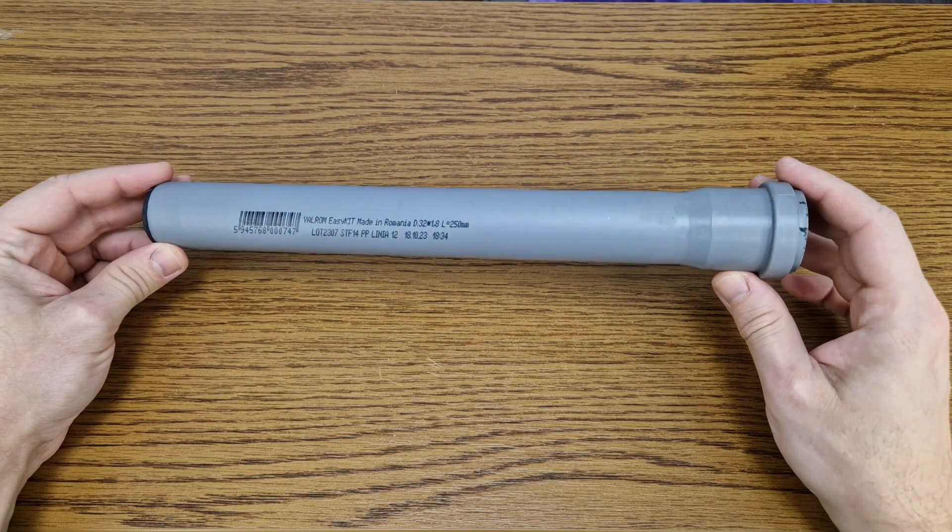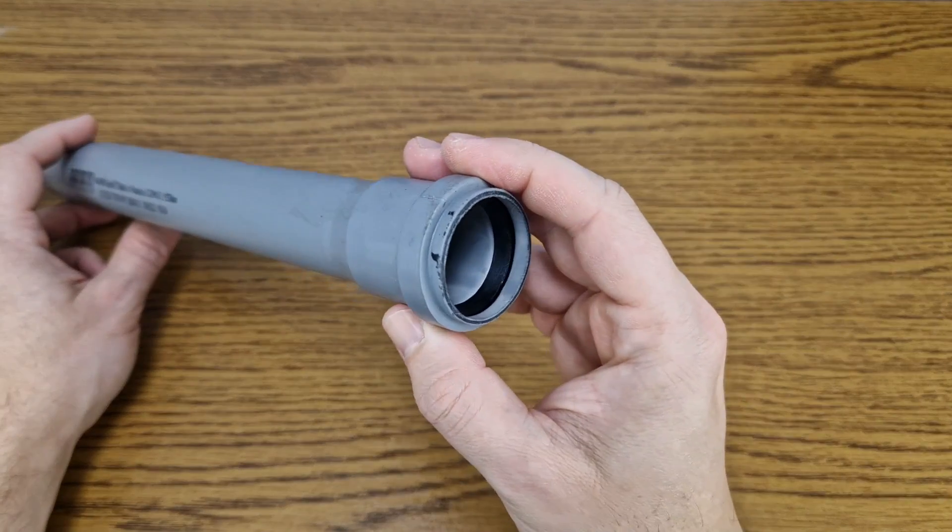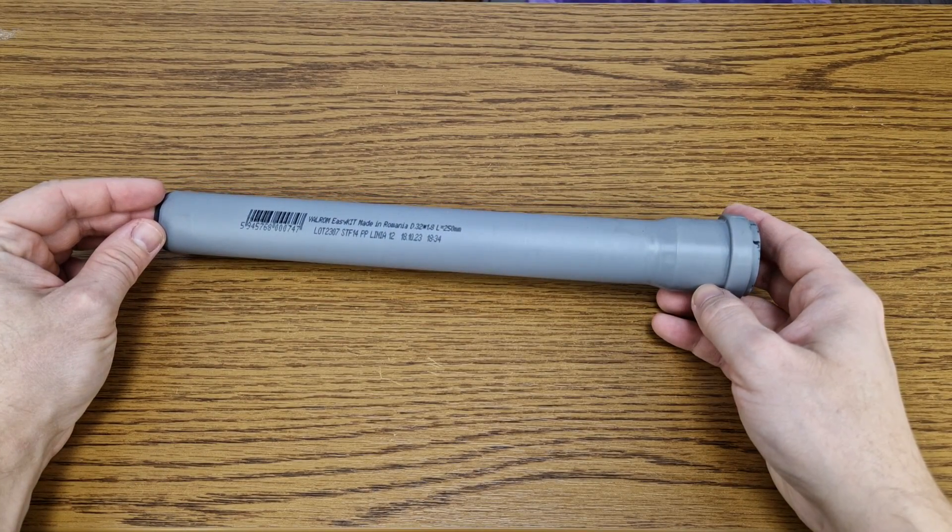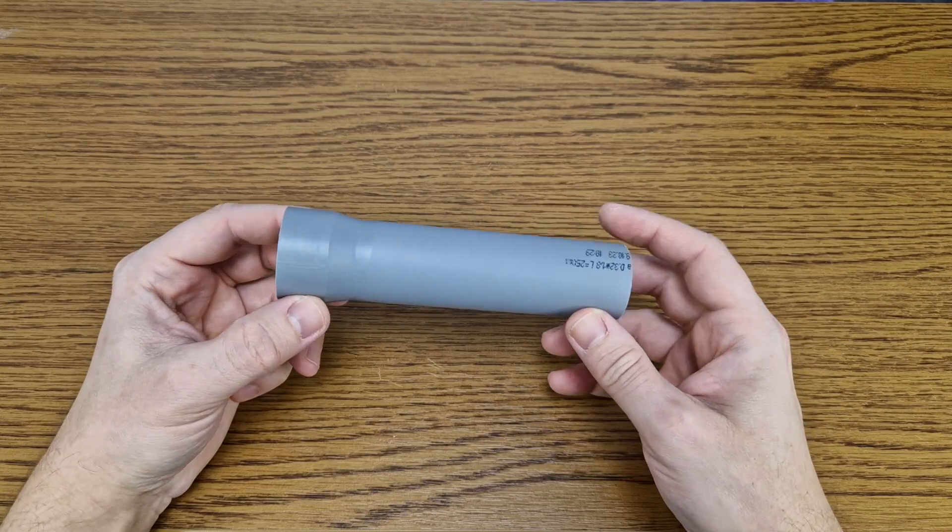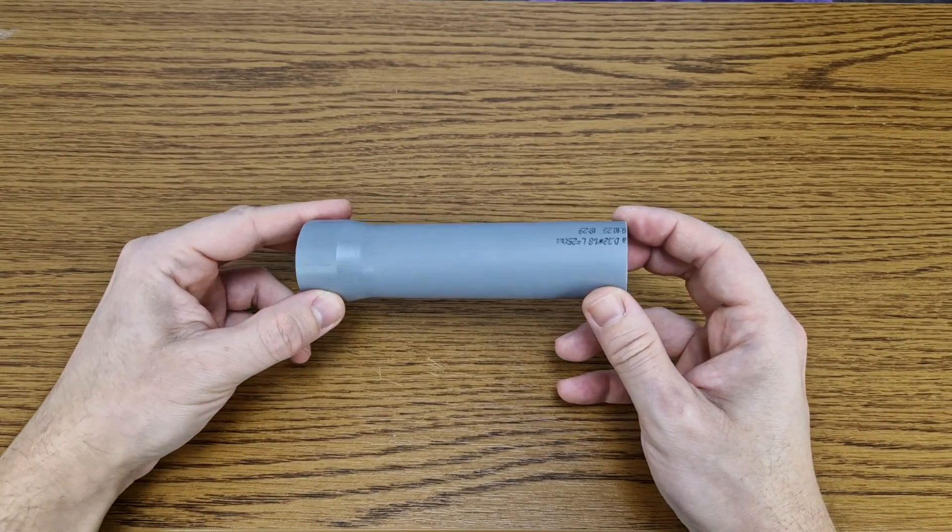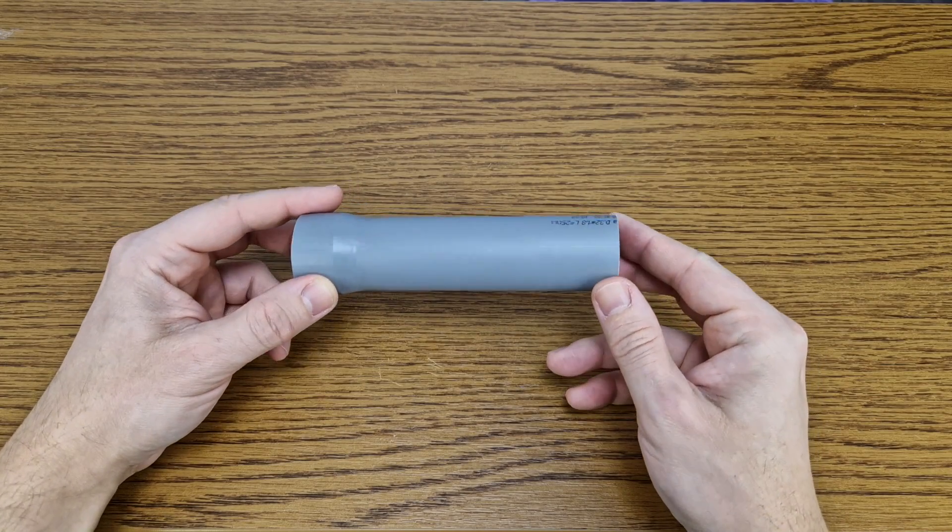The flashlight housing will be made from a simple PVC pipe with a diameter of 32 millimeters. It costs only 40 cents at a local hardware store. I will cut it on both ends and the remaining part has a length of 13.5 centimeters, so I can fit it in my pocket.